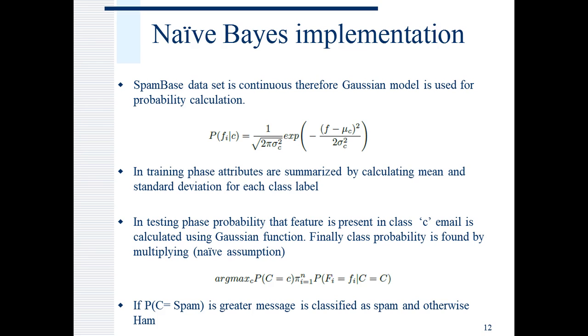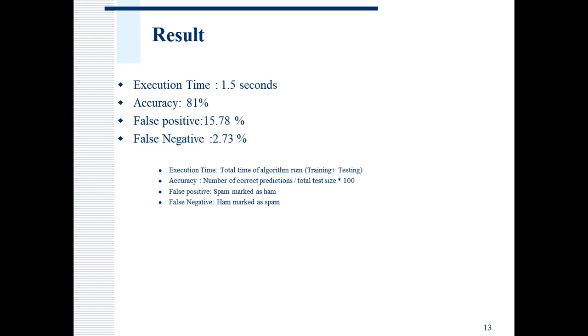In training phase, a classifier is created using Gaussian distribution assumption. Variance and means of attributes given a class is calculated. In testing phase, probability that feature is present in class C is calculated. Since independence among features is assumed, overall probability is a simple multiplication. The class that results in maximum probability is assigned to the test data. This is the result that I have found. The execution time is 1.5 seconds. Accuracy is 81%. As you can see that the accuracy is really low while the execution time is good enough.